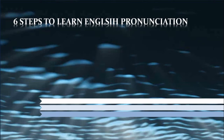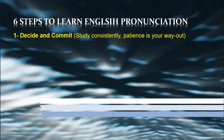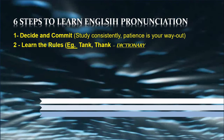Now I'm going to share six steps that will help you learn English pronunciation. If you implement these six strategies, you can easily improve your pronunciation. Step one: decide and commit. You cannot change your pronunciation skill overnight — it needs patience. Study consistently, and patience is your way out.